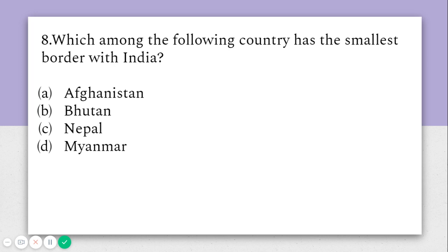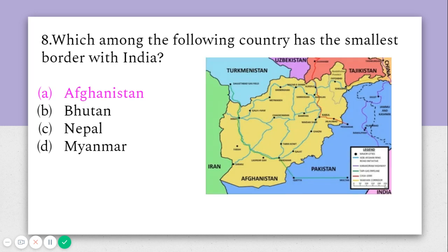The eighth question asks: which among the following countries has the smallest border with India? Options are Afghanistan, Bhutan, Nepal, and Myanmar. The correct answer is Afghanistan. Many people think Afghanistan does not touch India, but it does touch India in the POK region — that is Pakistan Occupied Kashmir — through what is called the Wakhan Corridor. That's all for today; in the next video I'll cover more questions. Thank you for watching.